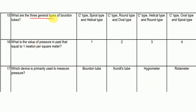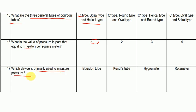What are the three general types of Bourdon tubes? The answer is C type, spiral type, and helical type. What is the value of pressure in Pascal that is equal to one Newton per square meter? The answer is one. Which device is primarily used to measure pressure? The Bourdon tube is used to measure pressure.